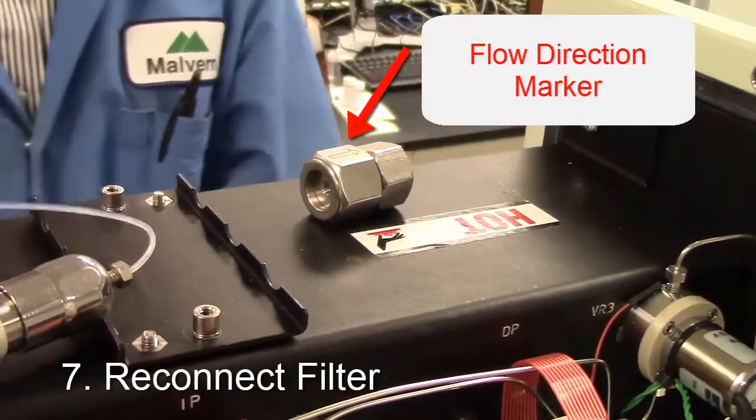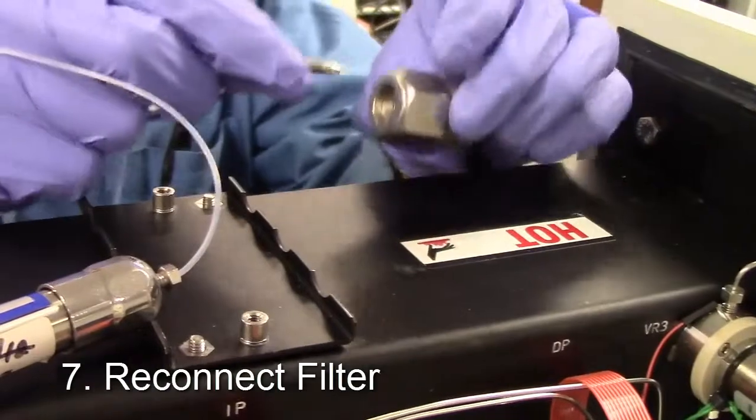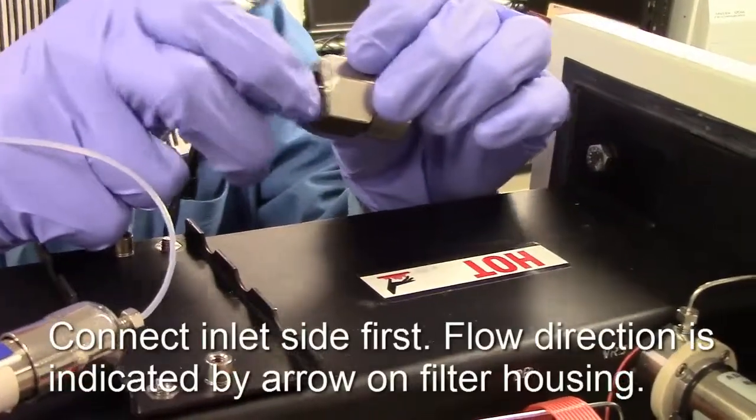Step 7. Reconnect the filter. Using the flow direction marker, connect the inlet line to the filter.